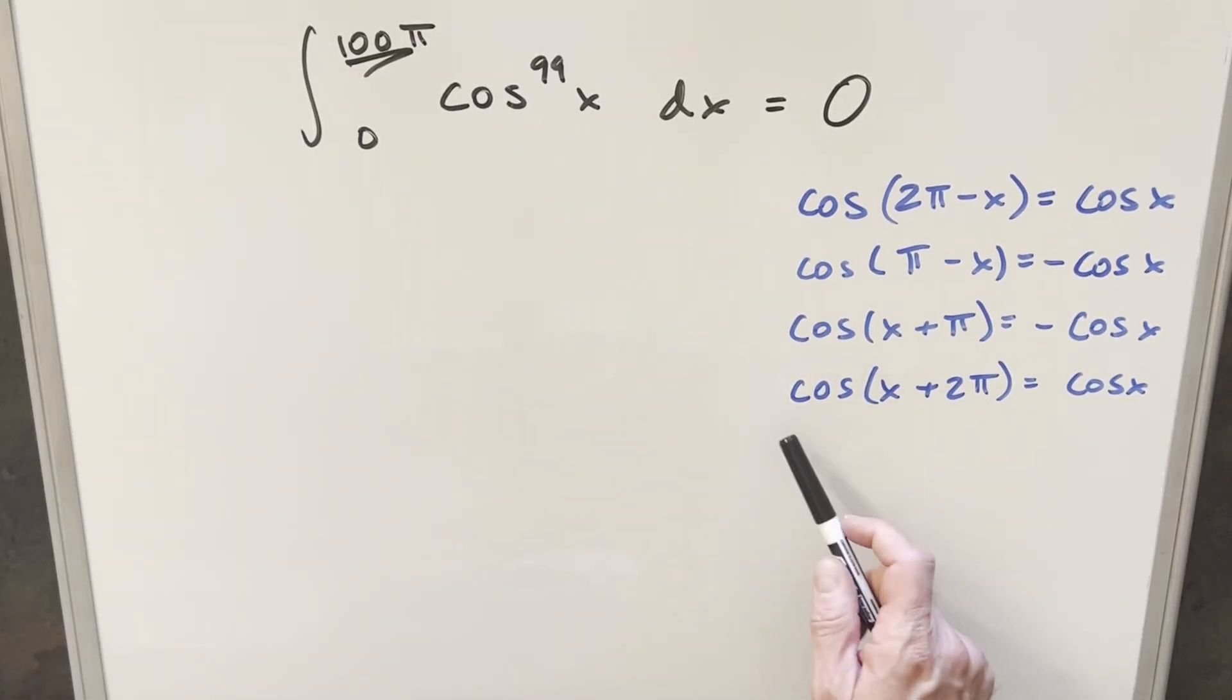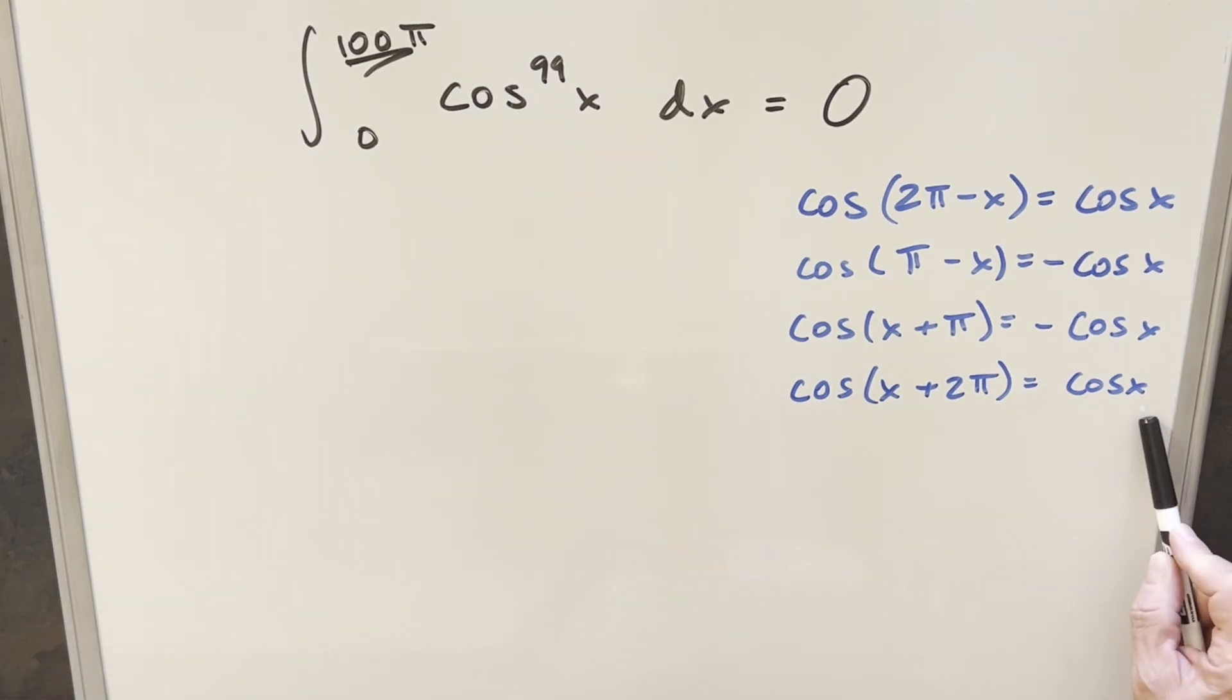So now before I move on to method number two, I want to get all these identities for cosine on the board. This part right here is going to be really important for speed because if you're looking these up or deriving them each time, it's going to slow things way down. So I'm just going to provide these up front.